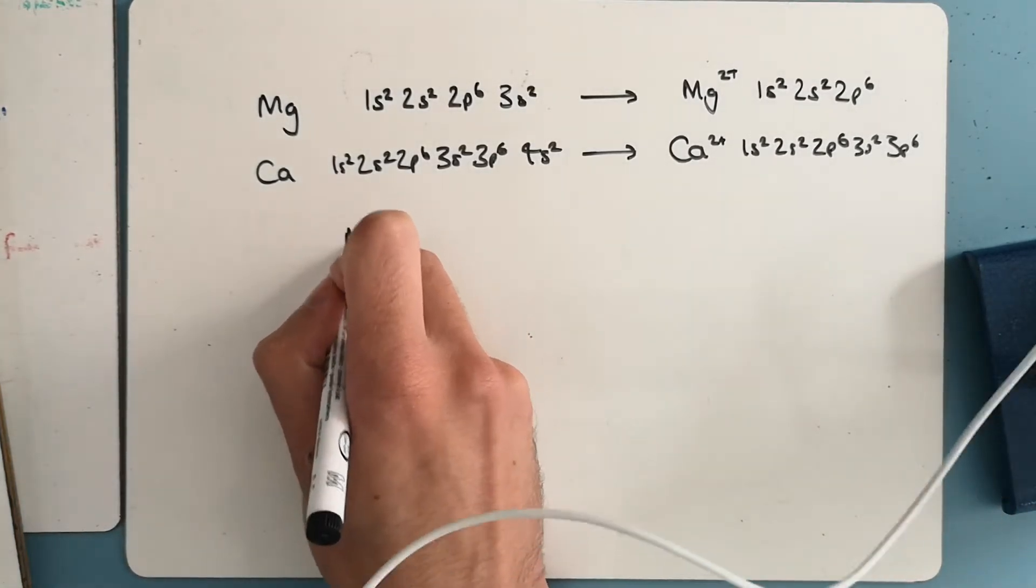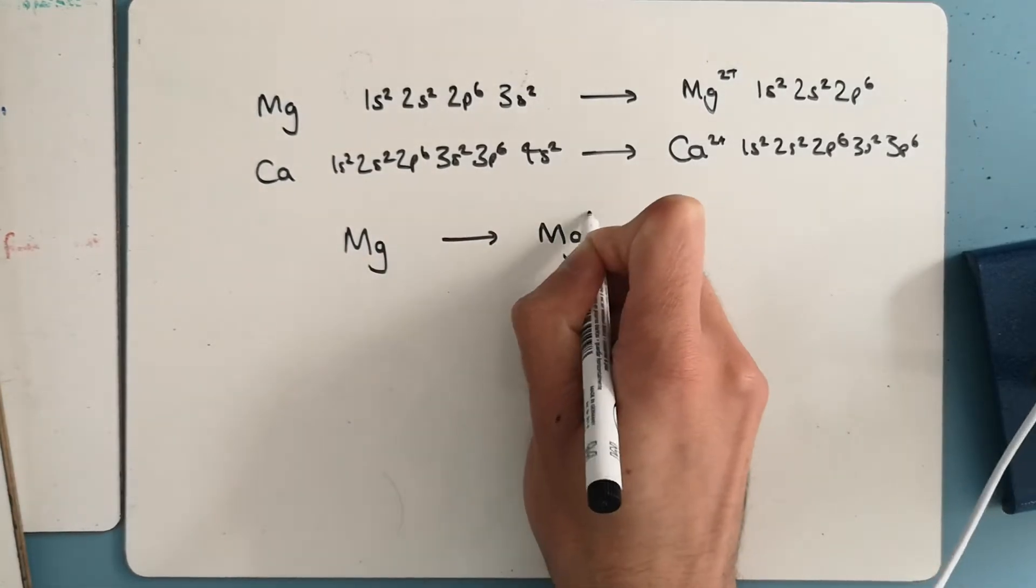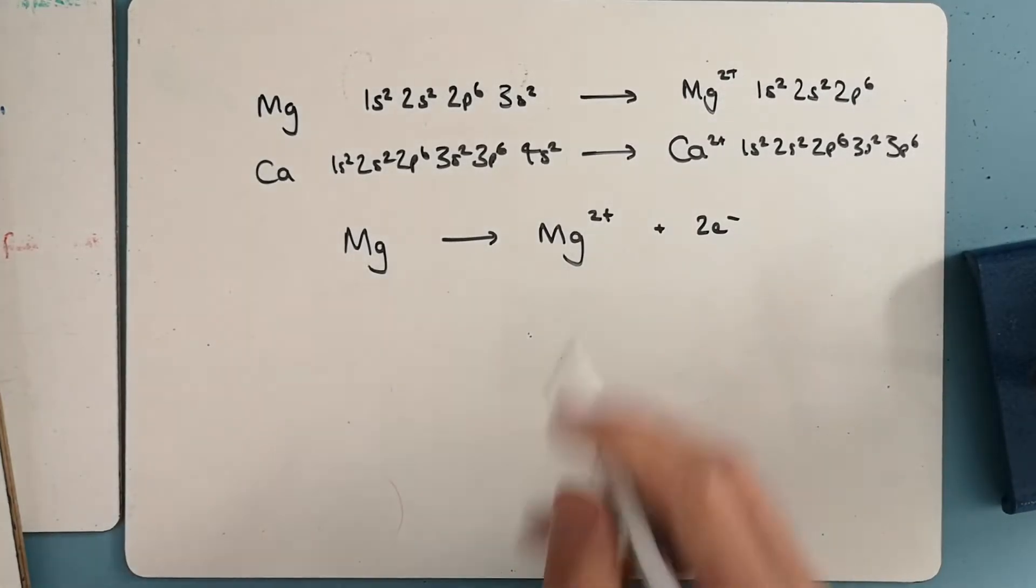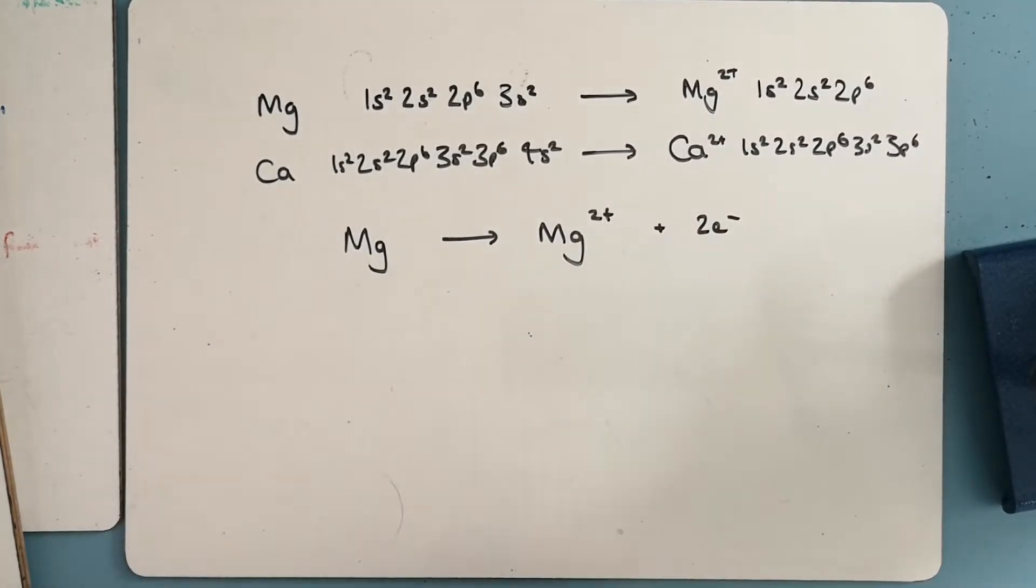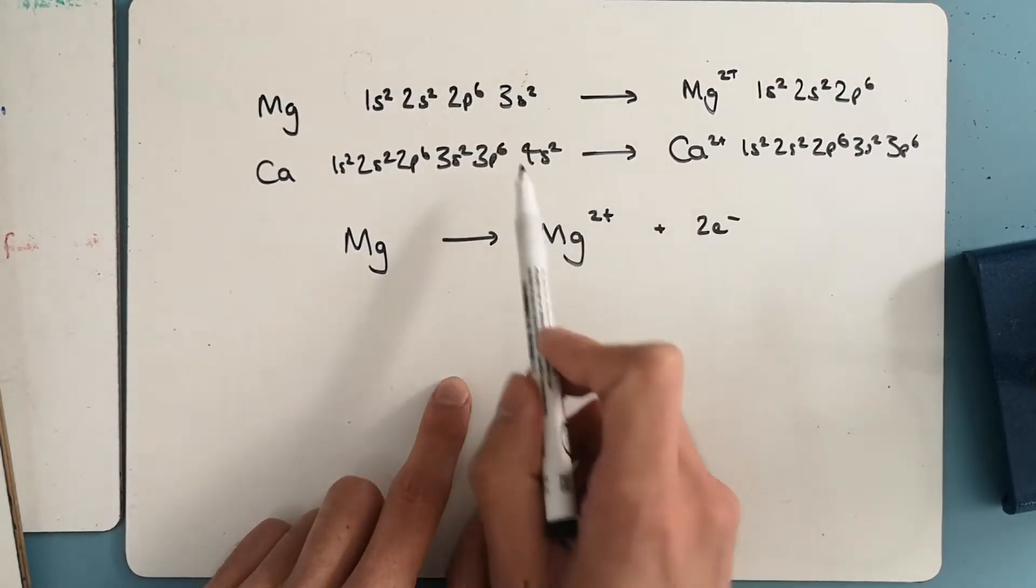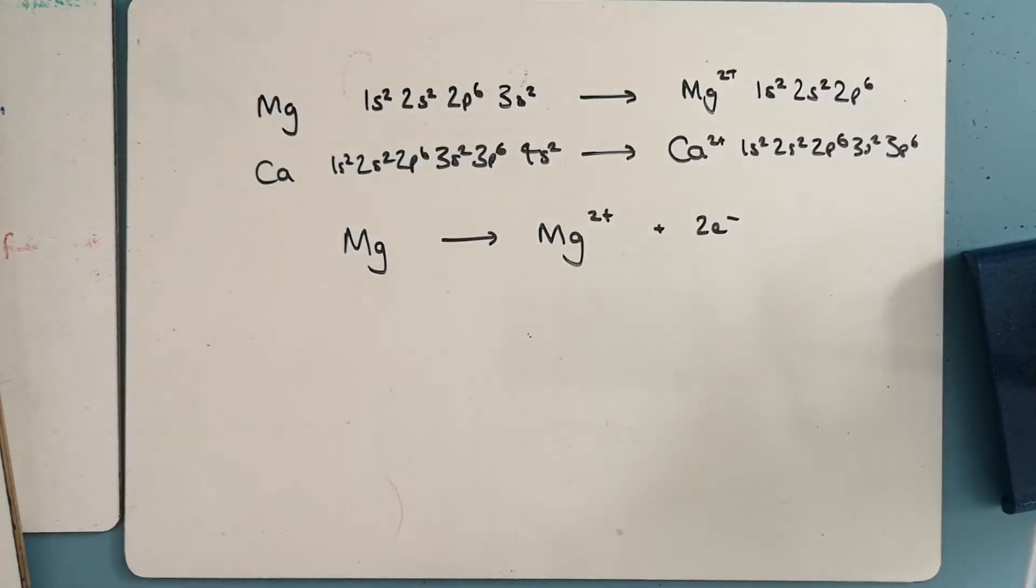And what happens in the equation, if we take magnesium, it's going to go to Mg2+ plus two electrons. This is a stable ion that magnesium forms, and all group 2 form 2+ ions, and they lose two electrons, and those two electrons are coming from this s subshell.